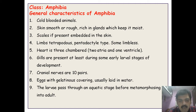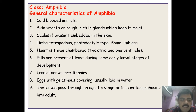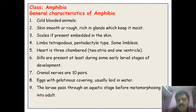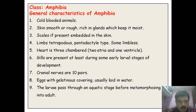The cranial nerves are ten pairs. Eggs have a gelatinous covering and are usually laid in water, because these animals must go to aquatic habitat as the development is indirect. Their larvae complete metamorphosis in water, passing through an aquatic stage before metamorphosing into the adult. These are the characteristic features of Amphibia.